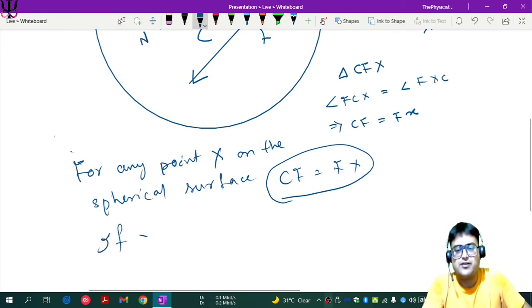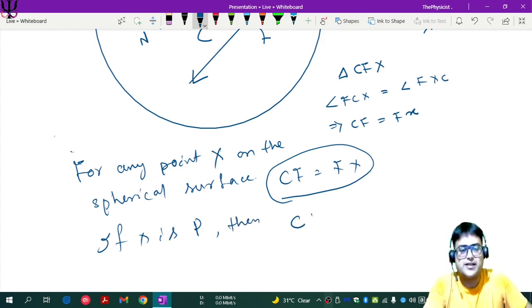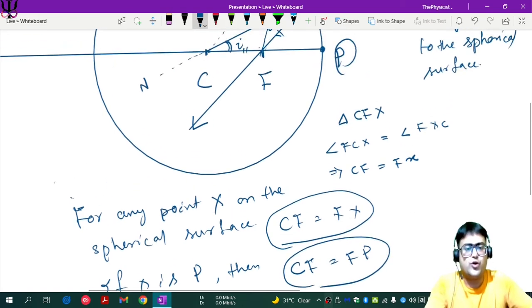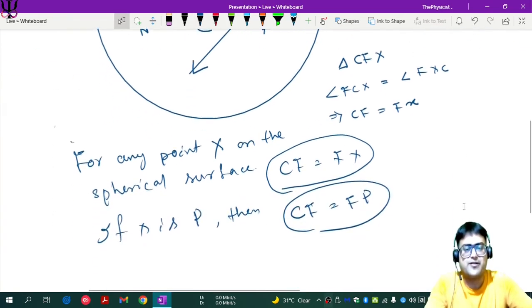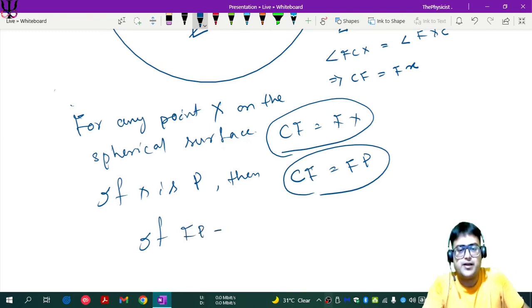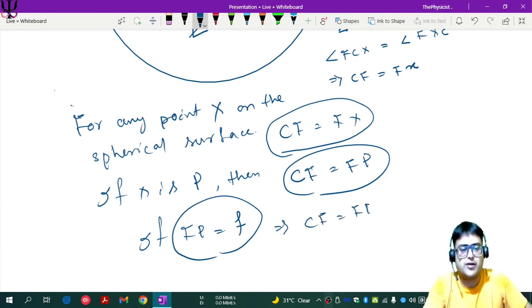So from pole to F, if you go like this in this direction, let us call this to be F, focal length F. If FP equals to F, that implies CF is also equal to FP, which is also equal to F. That means CF plus FP equals to F plus F, which is 2F.